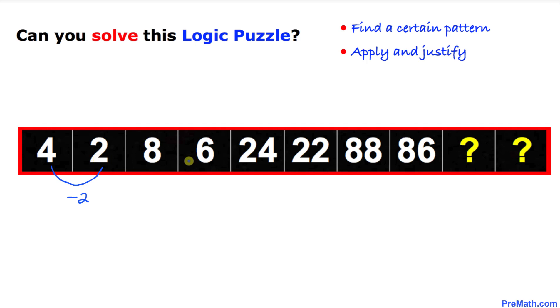Likewise, between 8 and 6 we see a difference of negative 2. Once again, on this one, 24 and 22, our difference is negative 2. And likewise the difference is negative 2 between 88 and 86.